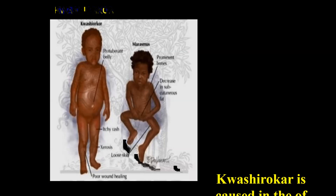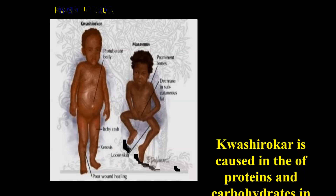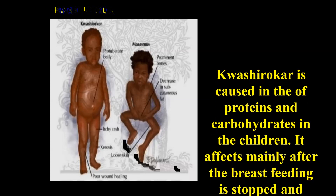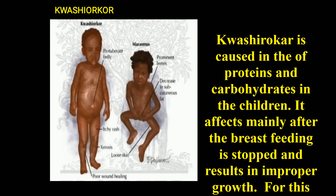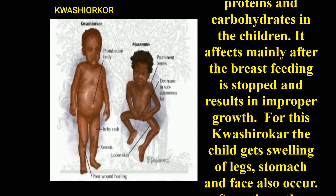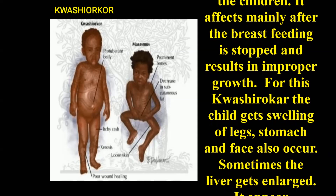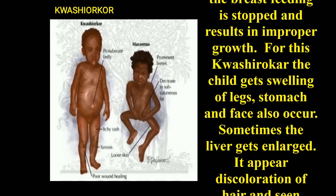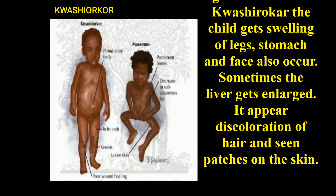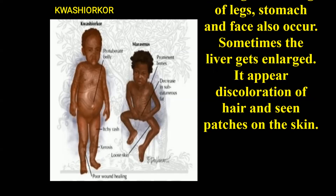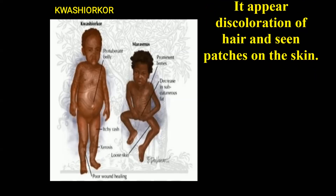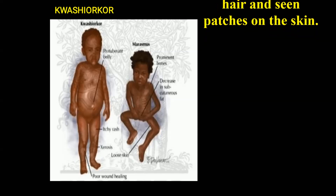Now let us discuss the disease kwashiorkor. Kwashiorkor is caused by the deficiency of proteins and carbohydrates in children. It affects children mainly after breastfeeding is stopped and results in improper growth. Children with kwashiorkor get swelling of legs, stomach, and face. Sometimes the liver gets enlarged. It also causes discolouration of hair and patches on the skin.